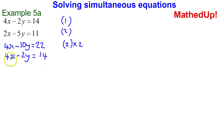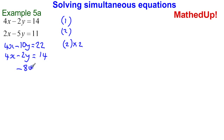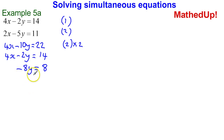We're now going to do the top equation take away the bottom equation. 4x take away 4x gives me no x. Negative 10y take away negative 2y — that's the same as negative 10y plus 2y, which gives me negative 8y. This is something you need to be really careful of: negative 10y take away negative 2y equals negative 8y. That's equal to 22 take away 14 which gives me 8. So negative 8y equals 8, divide both sides by negative 8, giving y = -1.